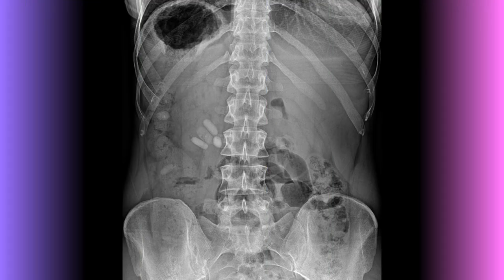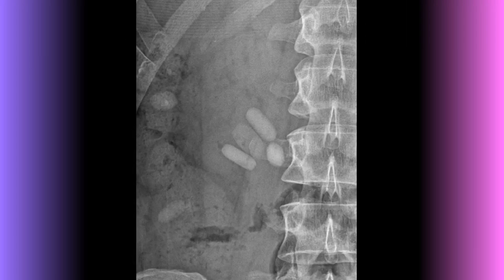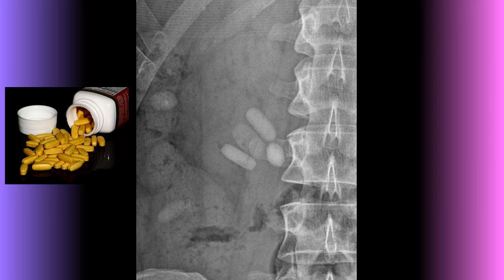On this radiograph, if you believe the large dark spot in the left upper abdomen is the abnormality, please review my video on how not to be fooled by the normal gastric air bubble. Its appearance can be distracting. So what else is on the image? In the left middle abdomen you should see multiple oval densities that almost look pill-shaped — that's because these represent multiple undigested pills.